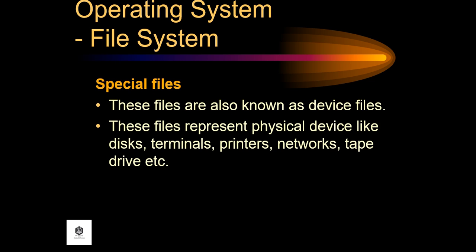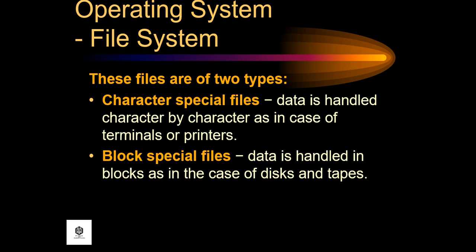Another type is special files, also known as device files. These files represent physical devices like disk, terminals, printers, networks, and tape drives. They are of two types: character special files, where data is handled character by character as in the case of terminals or printers, and block special files, where data is handled in blocks as in the case of disk and tapes.